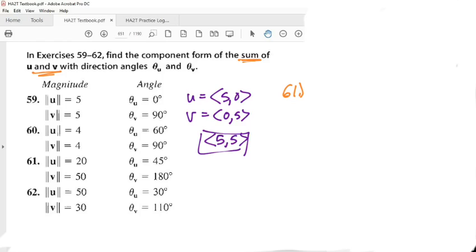Alright, so we got magnitudes here, right? This one's supposed to be 20, this one's supposed to be 50. Now, this says that this vector U is pointed in this direction. So that gives you a huge hint. Do you guys know the vector that points in the 45 degree angle? You guys should know this vector.